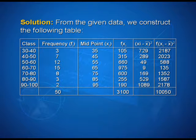Last column shows us the product of fi and xi minus x bar the whole square. That gives us 2187, 2023, 588, 135, 1352, 1587, and 2178. That gives us 10050 as the sum.